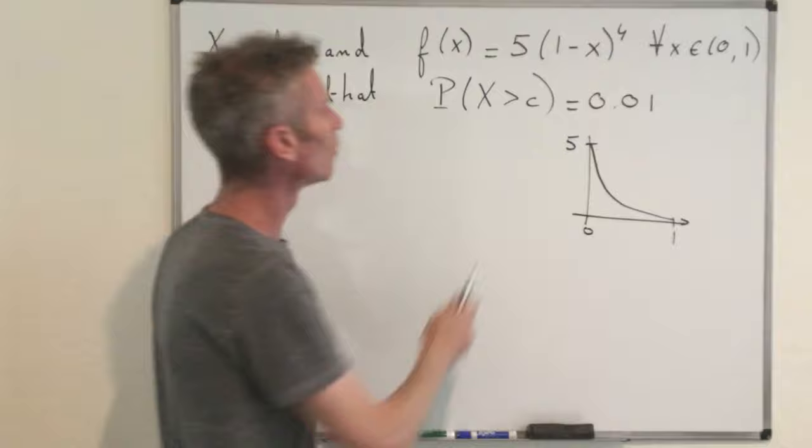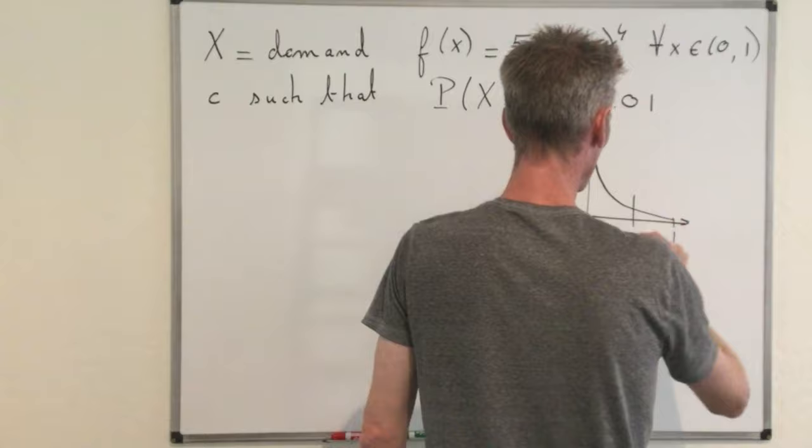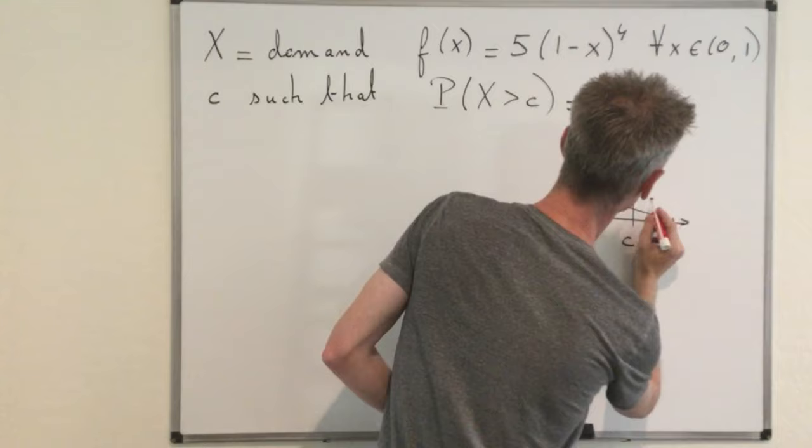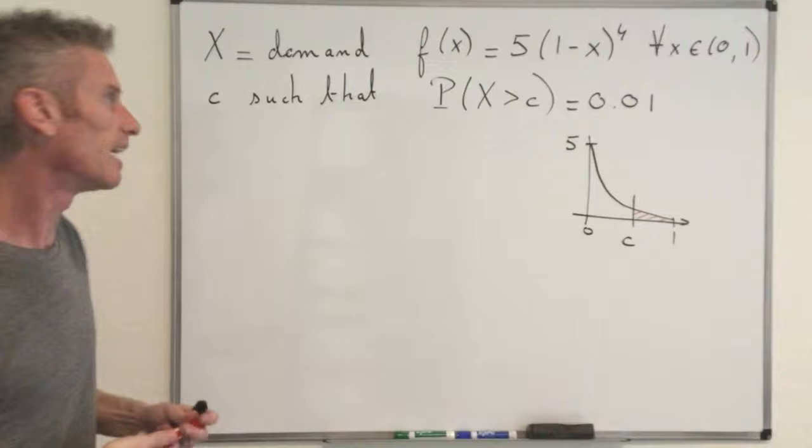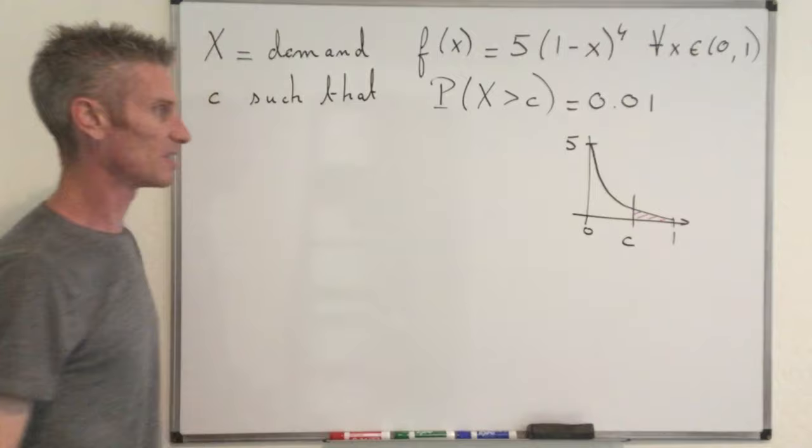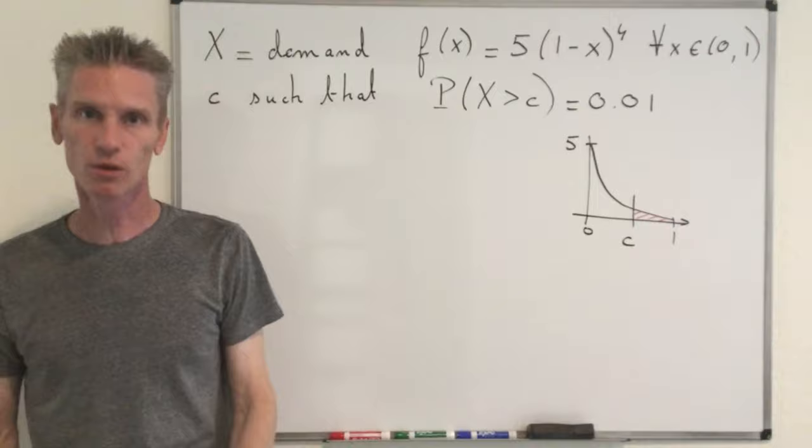And so what we want to do is find C. So let's see here, such that this white region here, okay, that corresponds to the probability that the demand exceeds the capacity of the tank. So we want this white region to be exactly equal to 0.01. Okay, that's geometrically what we want to do.